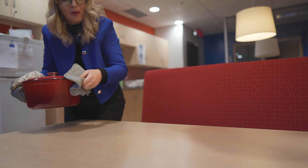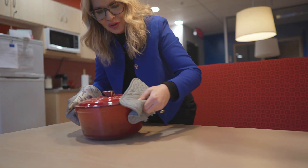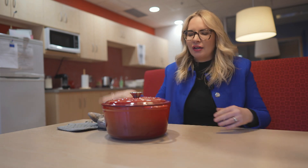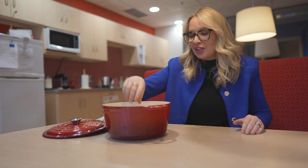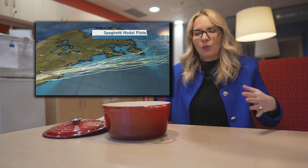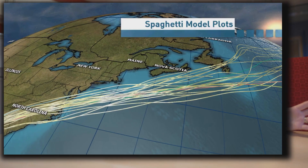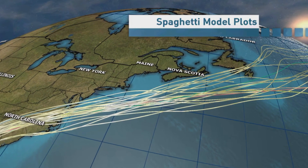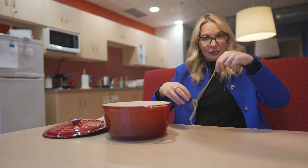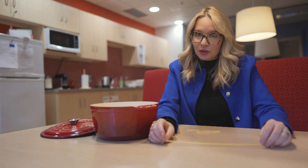Now comes the part of the show where I teach you my world-famous Hungarian spaghetti recipe — just kidding. We're going to talk about spaghetti plots. You've probably seen spaghetti plots in hurricane forecasting, where a rainbow-coloured array of lines show you the potential track of a hurricane. But what is it actually?